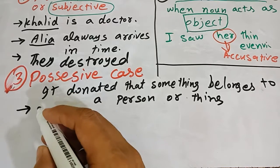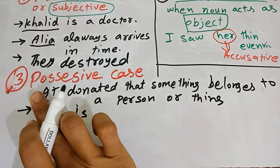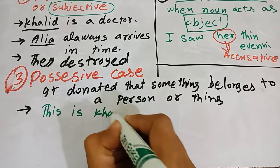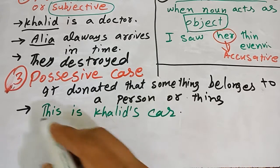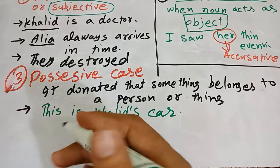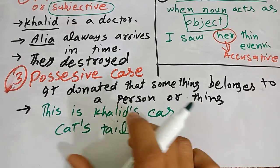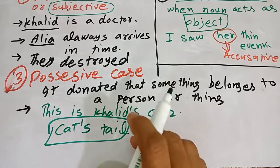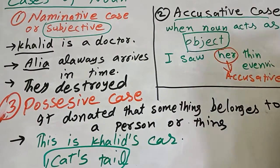I will give you an example. This is Khalid's car. The apostrophe-S is showing the possession of Khalid. Similarly, this is Ali's mother, this is a cat's tail. So these show the possession — that something belongs to a person or thing. This is called the possessive case of noun.